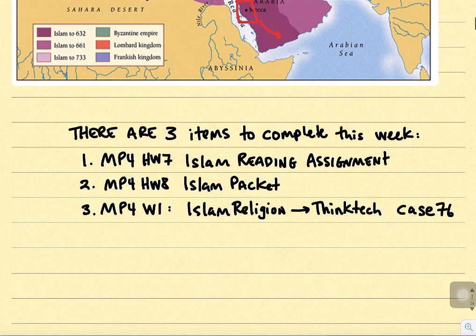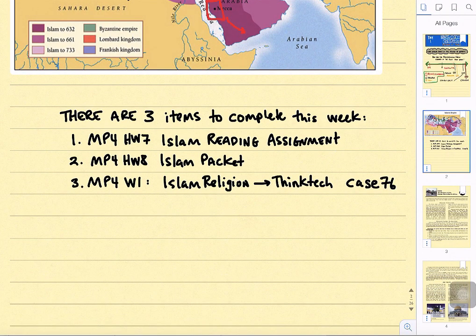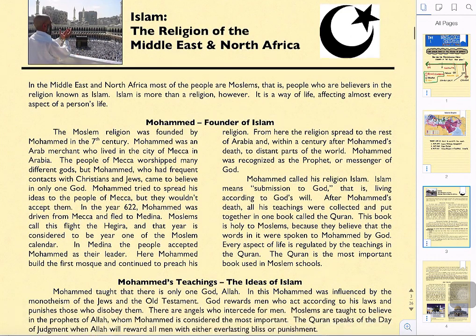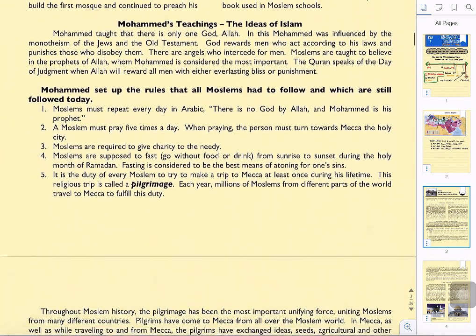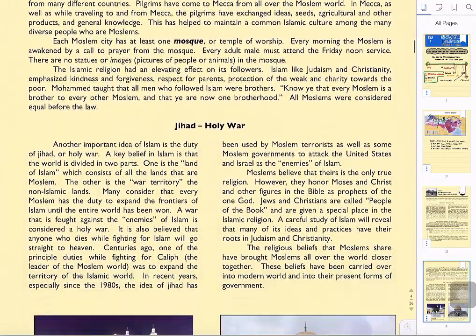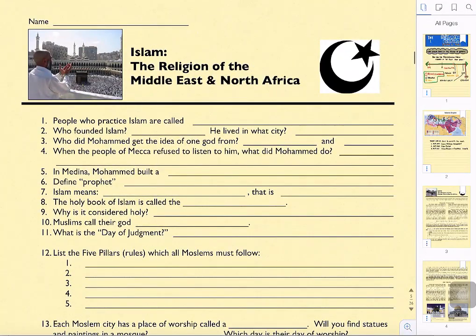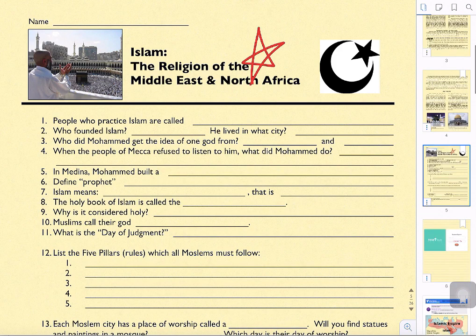Here's what we're looking at throughout the week — three assignments. The first one, Marking Period 4 Homework 7, is the Islam reading assignment. It's pretty straightforward — just a note sheet with right or wrong answers. You'll read through a fairly basic sheet located in Schoology and use it as background information to answer the questions on the page. You could work on that with a partner if you wish.